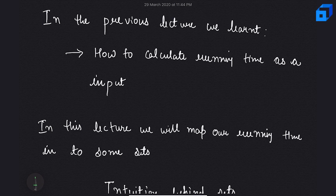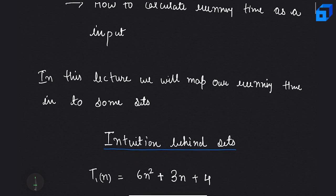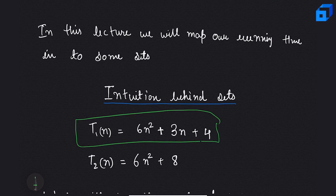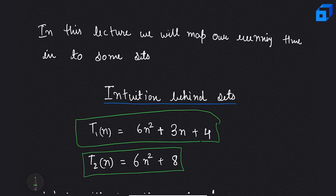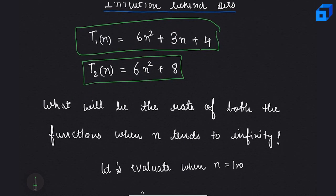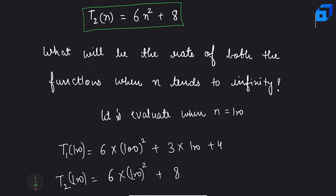In the previous lecture we learned how to calculate time as a function of input. Now we will map our running time into sets. Let's discuss the intuition behind sets. Say we have two functions: T1(n) = 6n² + 3n + 4 and T2(n) = 6n². We know how to evaluate such functions based on our model machine. Now, what will be the rate of both functions as n tends to infinity?